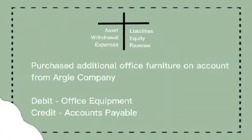Purchase additional office furniture on account from RG Company. In this transaction, John Smith purchased additional office furniture on account from RG Company. It means the office equipment will be on the debit side, because John Smith purchased it from RG Company. And accounts payable is on the credit side, because John Smith will pay it on account.